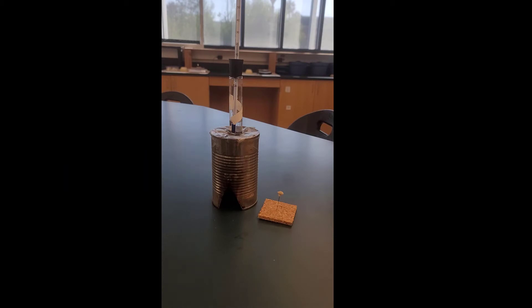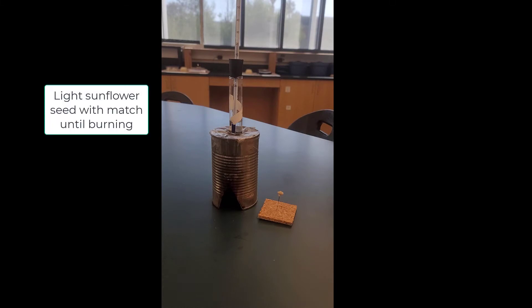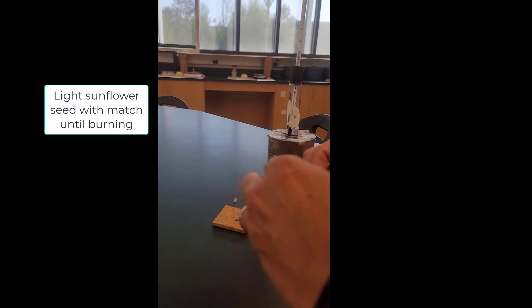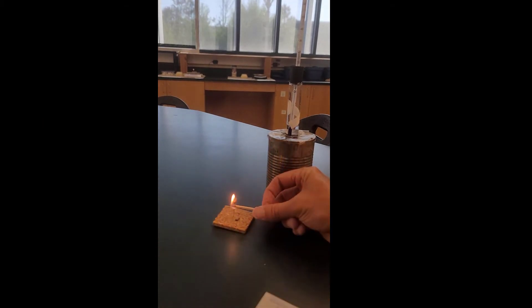What we're going to do first is start with the sunflower seeds. I'm going to take a match, light it, and light the sunflower seeds on fire so they're burning. Then I put the can over the top.